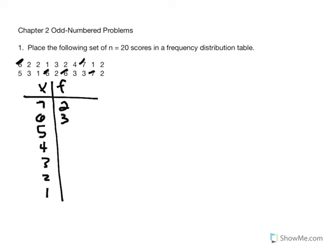For x=5, the top row doesn't appear but the second row has it occurring once. For x=4 we have it once. For x=3 we have it 1, 2, 3, 4 times — a frequency of 4. For x=2 we have 1, 2, 3, 4, 5, 6 — a frequency of 6. And our last x value of 1 has 1, 2, 3 — a frequency of 3. So our frequencies are: 2, 3, 1, 1, 4, 6, and 3.